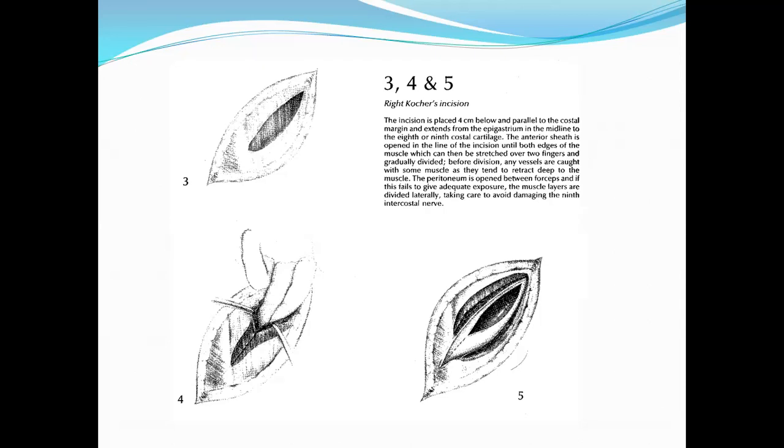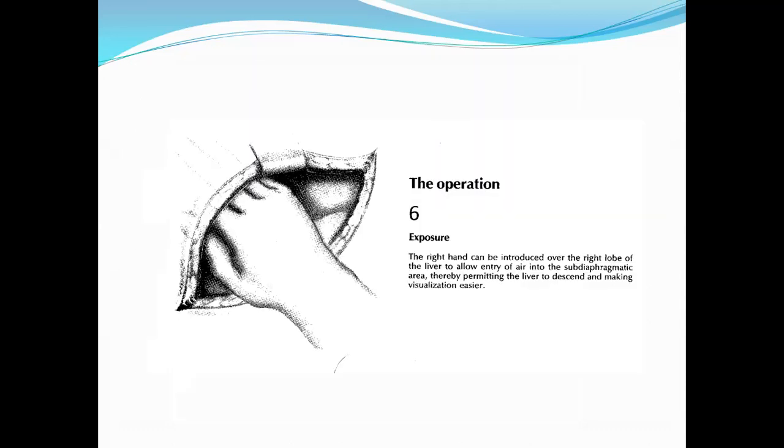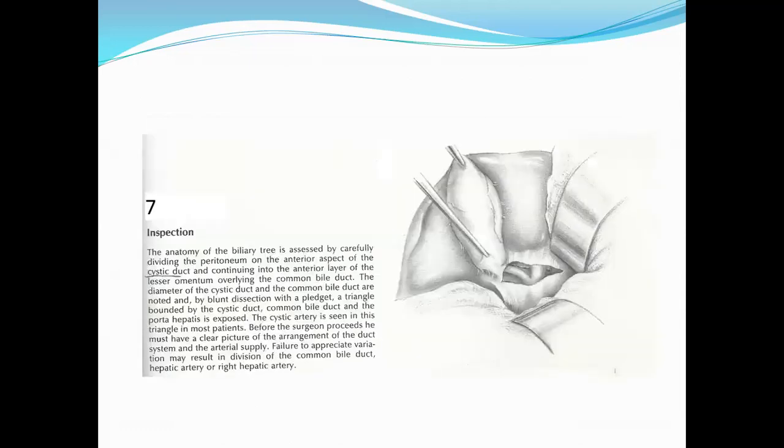The peritoneum is opened between the forceps. If this fails to give adequate exposure, the muscle layers are divided laterally, taking care to avoid damaging the ninth intercostal nerve. For exposure, the right hand can be introduced now over the right lobe of the liver to allow entry of air into the subdiaphragmatic area, therefore permitting the liver to descend and making visualization easier. The anatomy of the biliary tree is assessed by carefully dividing the peritoneum on the anterior aspect of the cystic duct and continuing into the anterior layer of lesser omentum overlying the common bile duct. The diameter of the cystic duct and the common bile duct are noted, and by blunt dissection with a pledget, a triangle bounded by the cystic duct, common bile duct, and the porta hepatis is exposed.